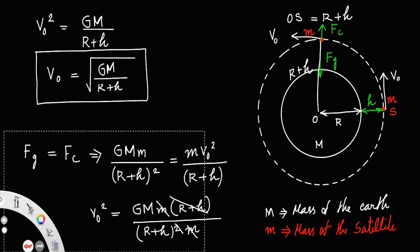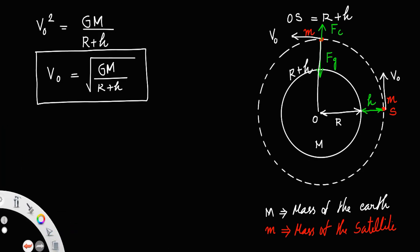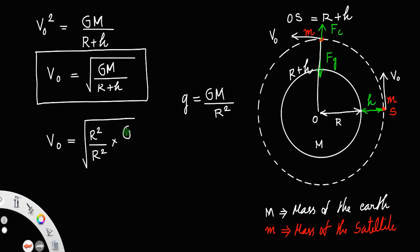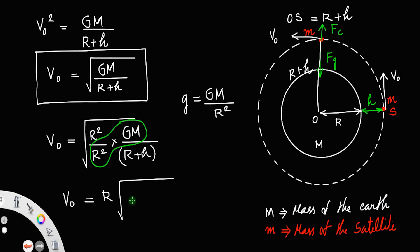We also know that surface gravity g = G·M / R². If we multiply numerator and denominator of G·M / (R + h) by R², the term G·M / R² equals g, so v₀ = R · √(g / (R + h)). This is another expression for the orbital velocity.